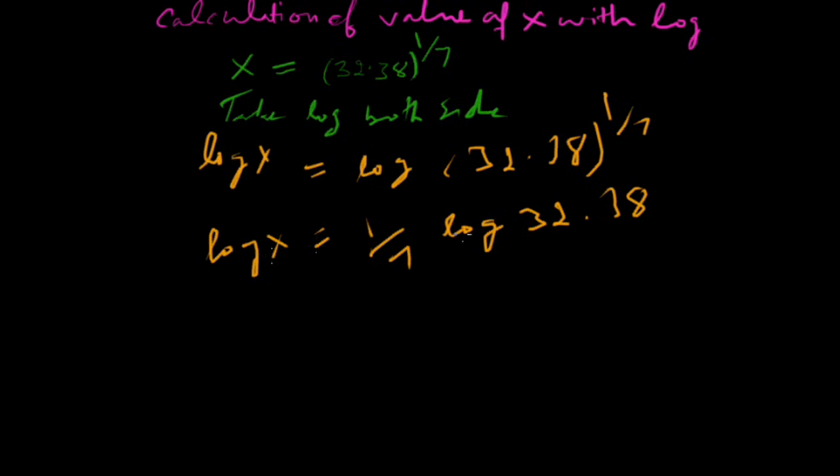Now we will calculate the value of log 32.38 from the log table. For this, we see that 32 has two digits before the decimal point, so the characteristic is 2. We subtract 1 from it and get 1. This 1 will be written before the mantissa which we calculate from the log table.